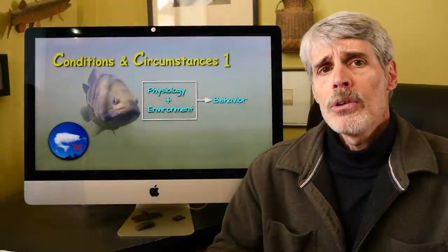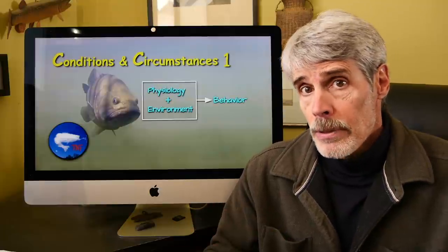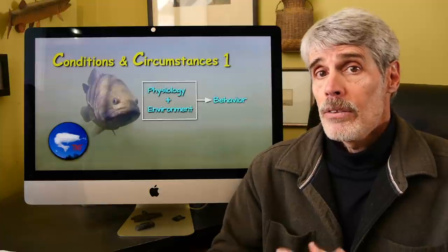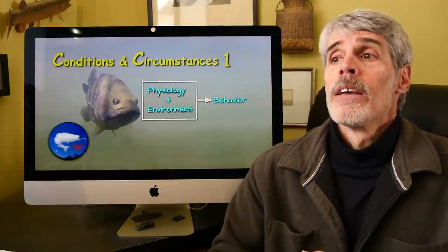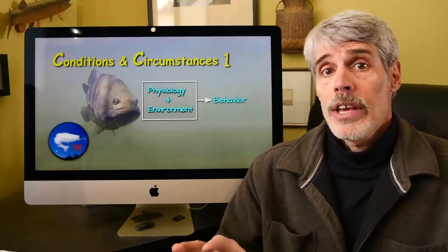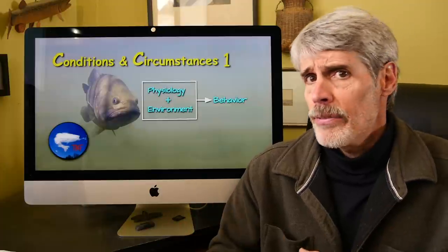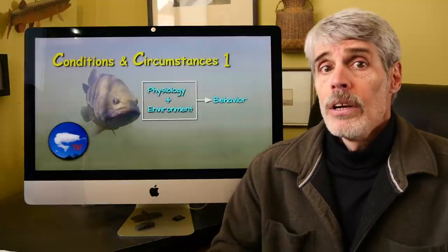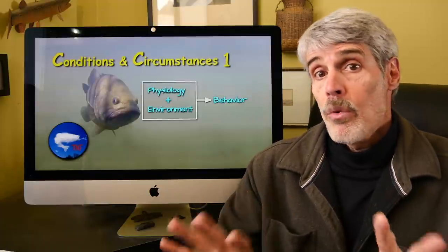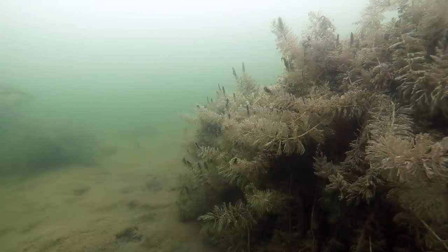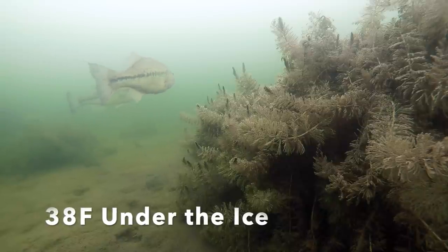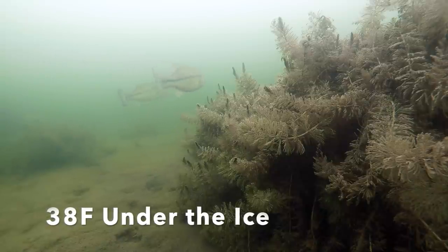Fish are able to acclimate, that is adjust their metabolism to match seasonal water temperature changes and remain functional throughout the year. Some research suggests that it takes a fish inside of 24 hours to acclimate and become basically functional to a fairly rapid water temperature change. The process continues however, taking a longer period to fully acclimate, what's called acclimatize, that is acclimation at a seasonal time scale.